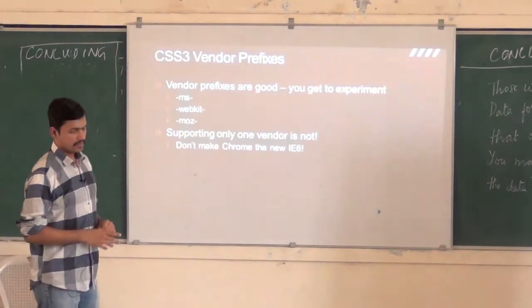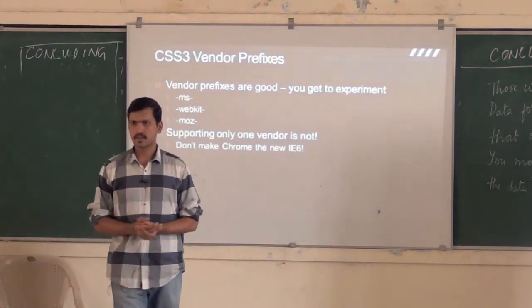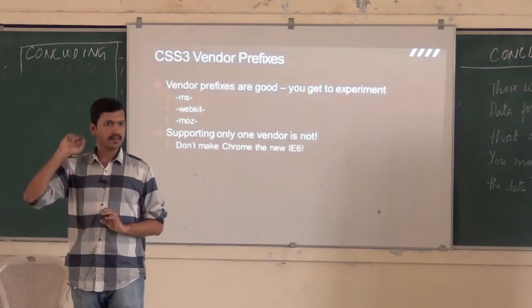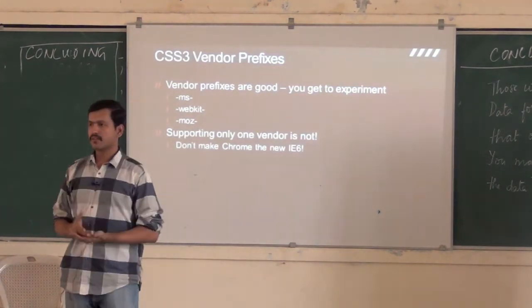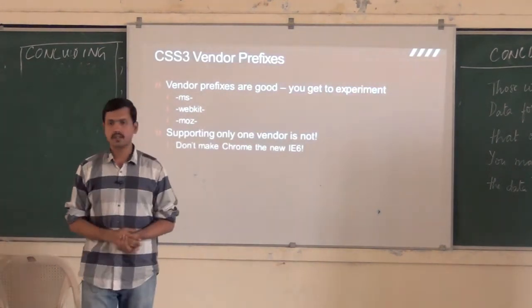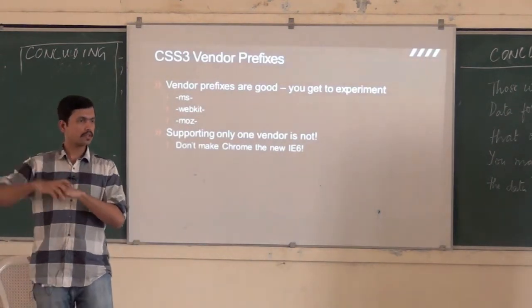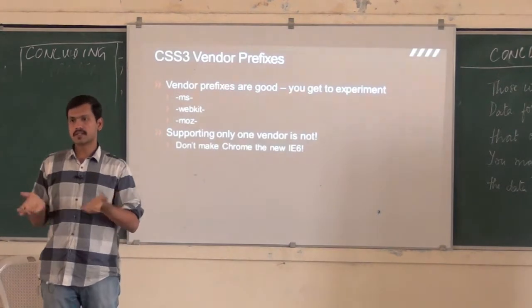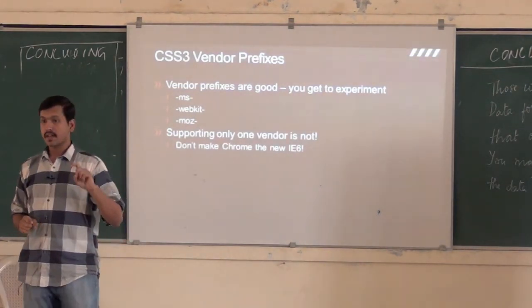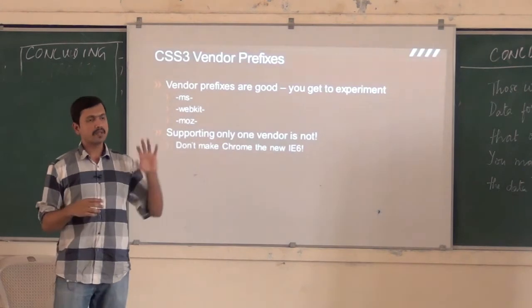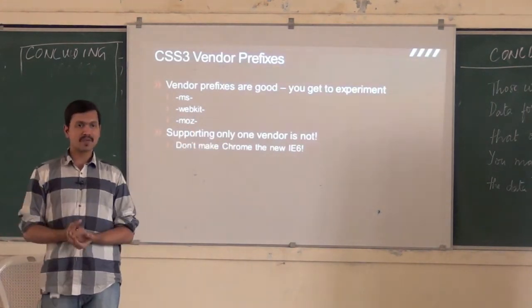The problem that I see in the industry is that folks are supporting only WebKit. So everybody puts -webkit- and it works perfectly fine in Chrome and Safari, but Firefox, IE, and Opera — even if they support that particular vendor-prefix version of that particular spec — they still do not see it. Because the developer has only used -webkit- CSS. In fact, there are plenty of sites where I find that people put -webkit- and they don't even put the W3C version of it.